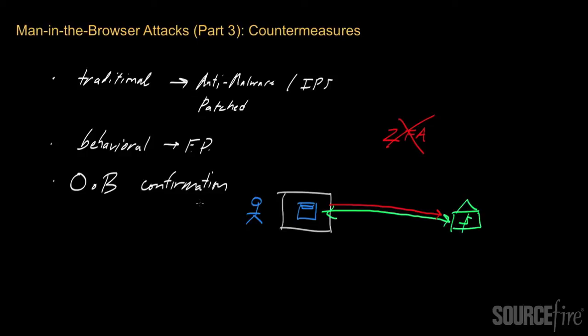This is something you might have actually seen in practice. What will typically happen in this case is that the bank will provide a user with a transaction confirmation regarding any transaction they've done, but through a different channel than the channel over which the transaction actually took place initially. For example, the user might receive an email with the transaction details, a cell phone text message or a message on their phone, something along those lines, something that's different from receiving the confirmation on the browser.